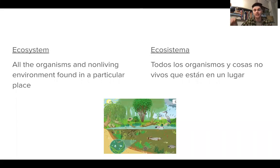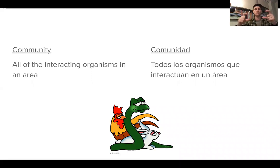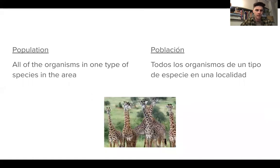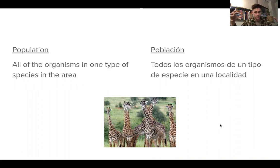An ecosystem is living and non-living. A community is one level more specific — it's the interacting organisms in an area, and this is only the living things. So we're talking about animals and plants and bacteria. A community does not include water; it does not include rocks or dirt or air. More specific than a community is a population: all the organisms of one species in a specific area, like a population of giraffes, or in our classroom, a population of human beings.